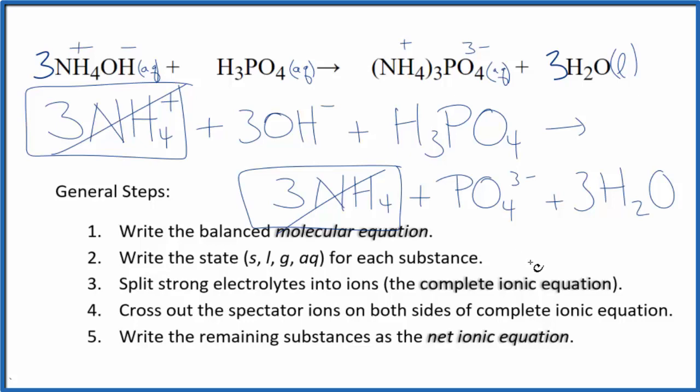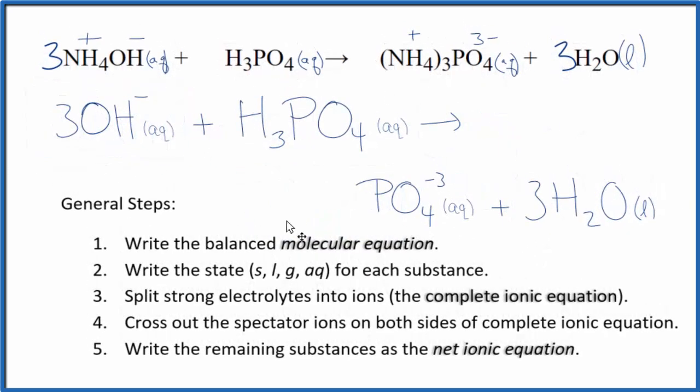Let me clean it up. I'll write the states in. We'll have our net ionic equation. So this is the balanced net ionic equation for ammonium hydroxide plus phosphoric acid.